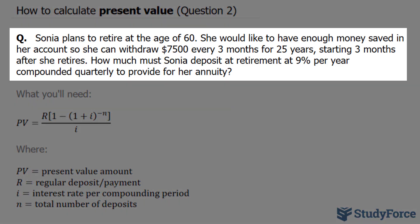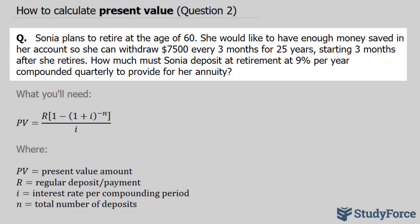Sonia plans to retire at the age of 60. She would like to have enough money saved in her account so she can withdraw $7,500 every 3 months for 25 years, starting 3 months after she retires. How much must Sonia deposit at retirement at 9% per year compounded quarterly to provide for her annuity?